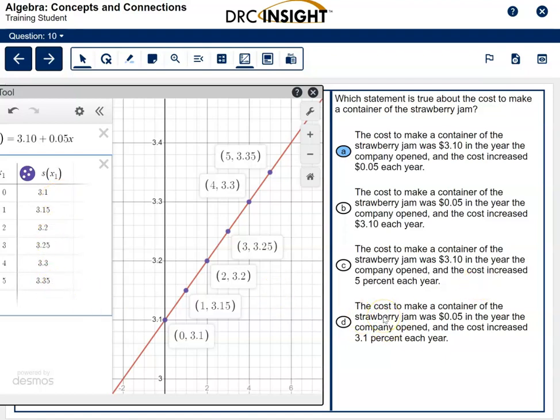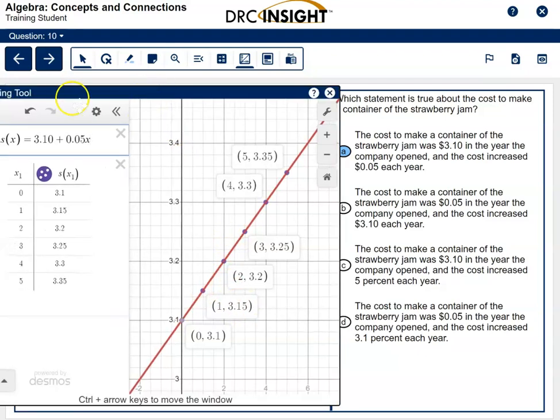The last one says the cost to make a container was $0.05 in the year the company opened and it increased $3.10 a year. No, it didn't increase but $0.05 a year. So the correct answer was answer choice A.